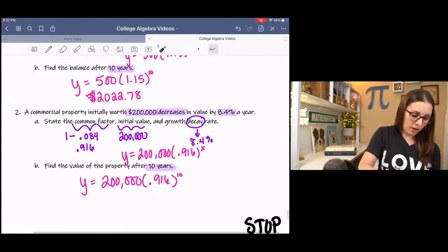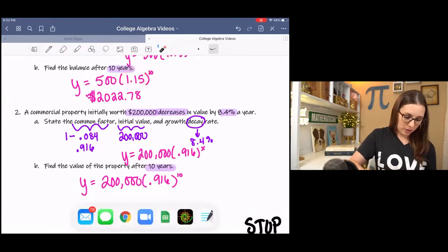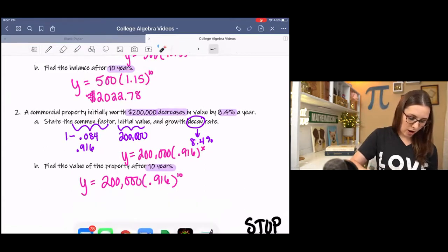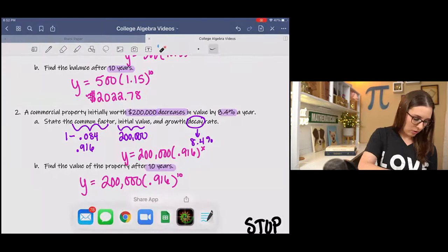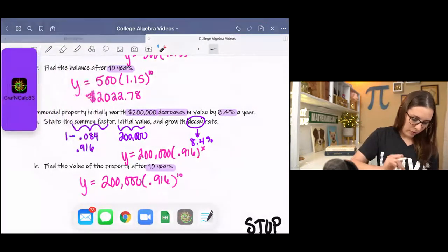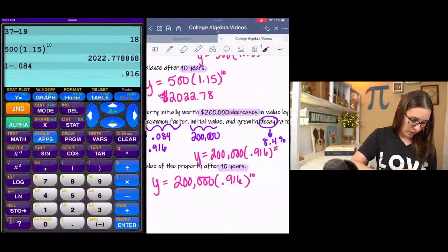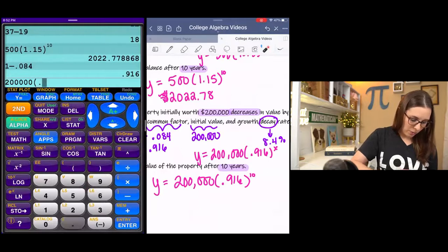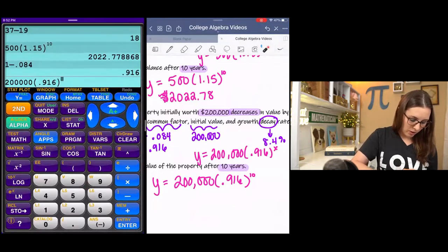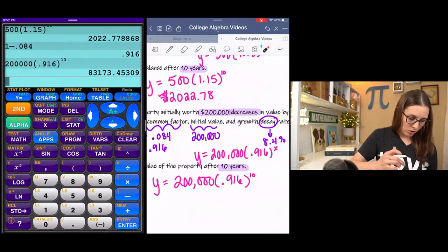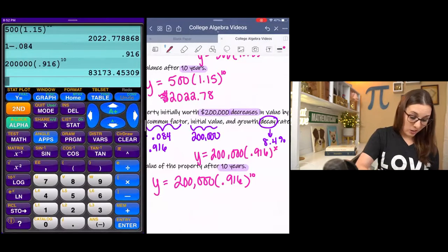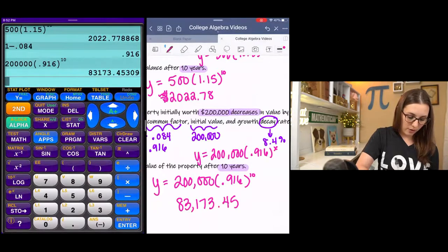It's losing value every year. And then if it's above 1, it's growth. So let's type this in the calculator and let's figure out. We've got 200,000 times 0.916 for 10 years. And after 10 years, it would be 83,173.45. That's not good. That's sad.